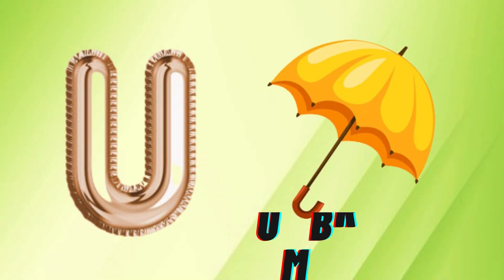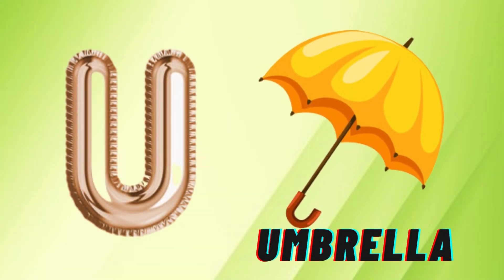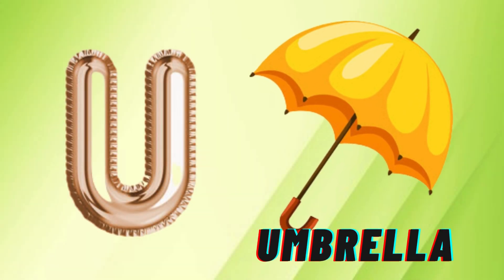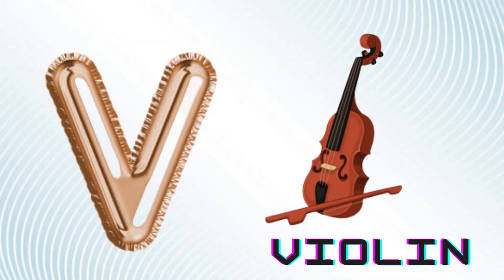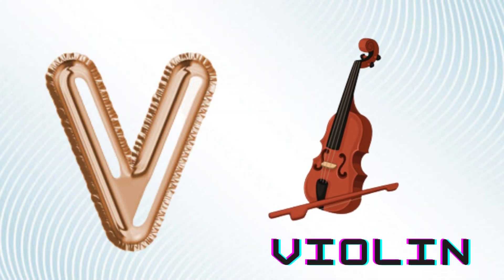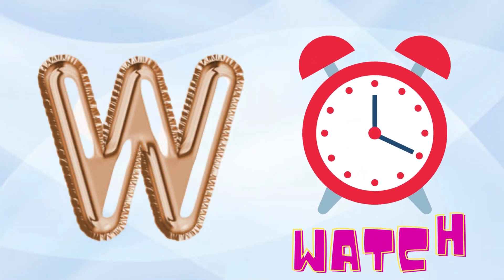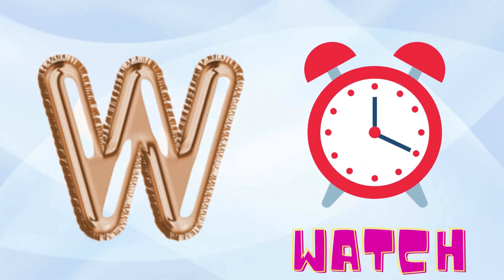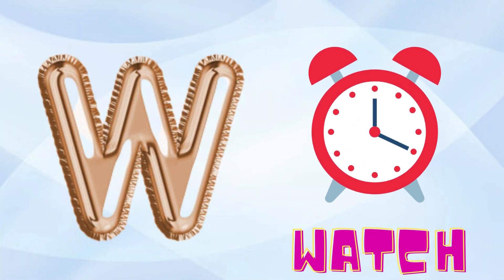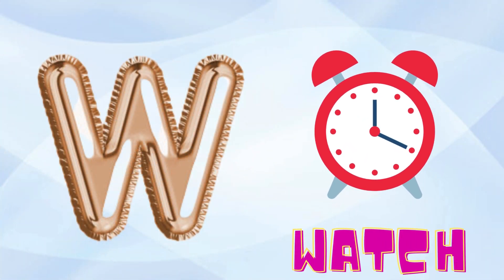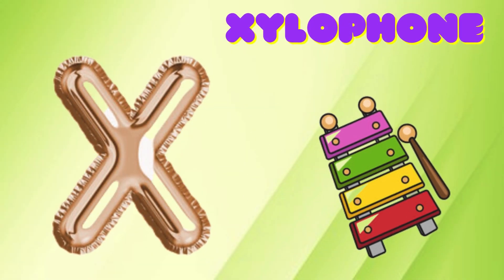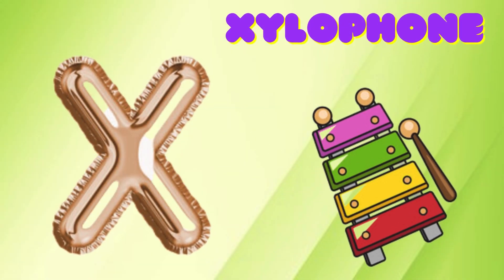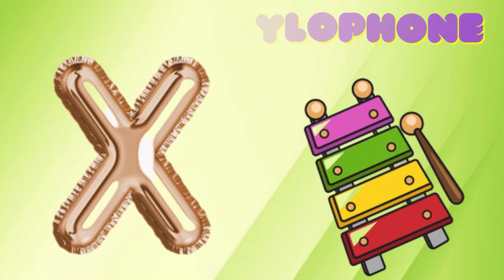U is for umbrella, u-u-umbrella. V is for violin, v-v-violin. W is for watch, w-w-watch. X is for xylophone, z-z-xylophone.